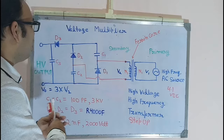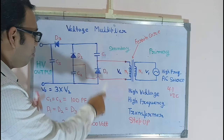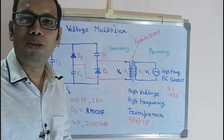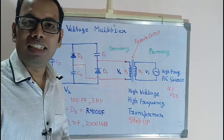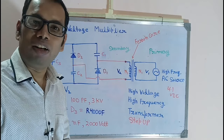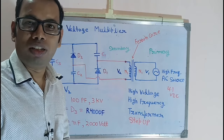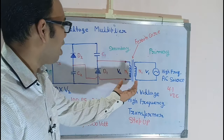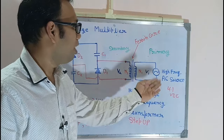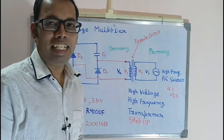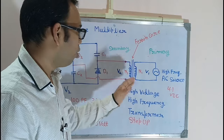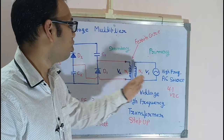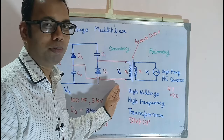The second main component is the voltage multiplier circuitry. In the voltage multiplier circuitry, we use capacitors and diodes. In this, we are applying a high frequency AC source to the input of the transformer, and we are stepping it up from V1 volts to V2 volts.